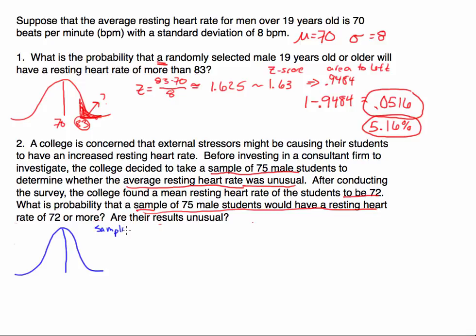I'm going to be looking at the sampling distribution. I know that the mean of the sampling distribution is equal to the population mean, which in this case is still 70. So here's 70 right here in the middle of our sampling distribution, and I want to know about this observation of 72. I want to know: is finding a mean of 72 unusual?